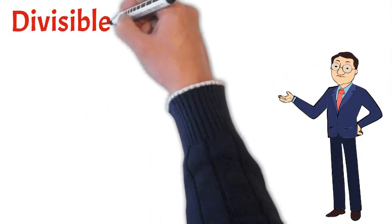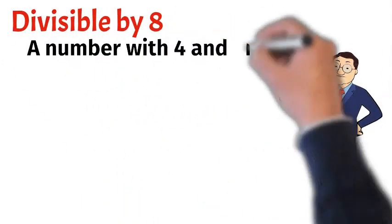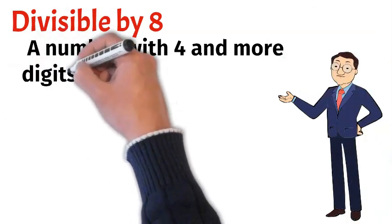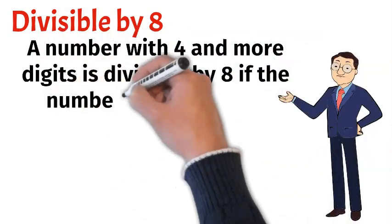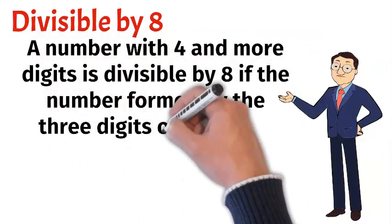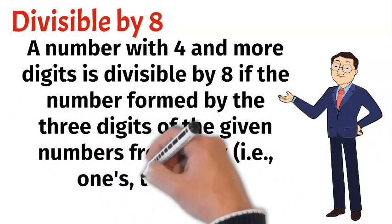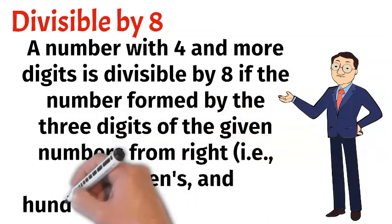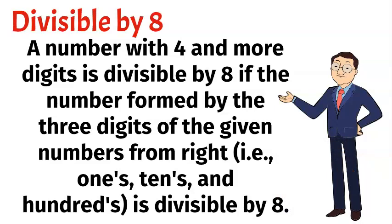Divisible by 8. A number with 4 and more digits is divisible by 8 if the number formed by the 3 digits of the given number from the right, that is the 1's, 10's and 100's, is divisible by 8.